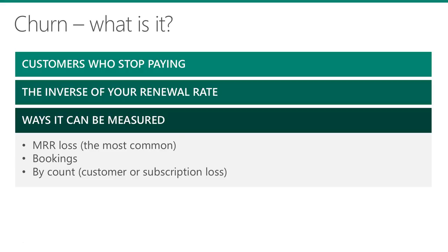The customer count doesn't factor in the revenues, so it does offer some extra insight. Take an extreme example where there's one client producing $100,000 in monthly revenues, and 100 clients producing $1,000 each. If 20 of the smaller clients leave you, you would have a churn rate of 20% in your customer base, but only 10% in your monthly recurring revenues.